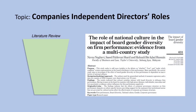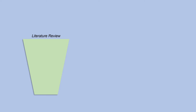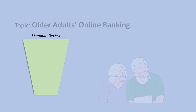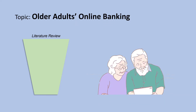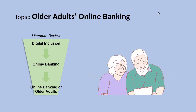Or if your study is about the role of independent directors in a company, you may start your literature review with reviewing the literature on corporate governance and then narrow it down to board of directors and then to independent directors' roles. Another example: if your study is about older adults' online banking, you may start with a broad discussion like digital inclusion and then narrow it down to online banking and finally to the online banking of older adults. Depending on your topic, you may consider several levels to narrow down your literature review.